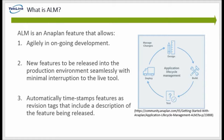Application Lifecycle Management, or ALM for short, really enhances the capabilities of AnoPlan and has come a long way in its development, leading to three main reasons its use is considered best practice. ALM is an AnoPlan feature that allows agility and ongoing development. It allows new features to be released into the production environment seamlessly with minimal interruption through the live tool. And finally, it automatically timestamps features as revision tags that include a description of the feature being released.